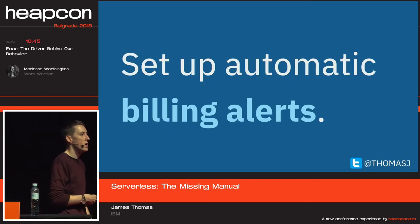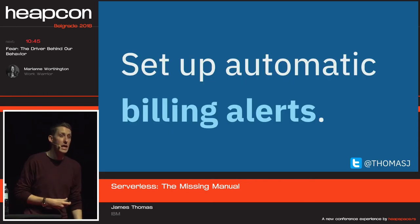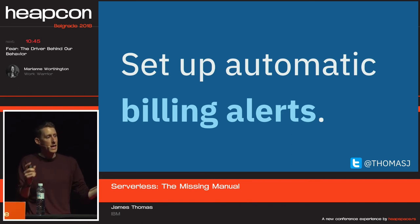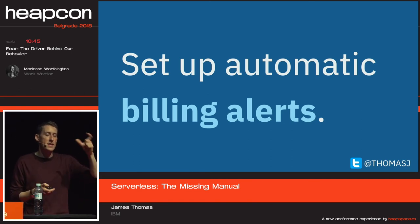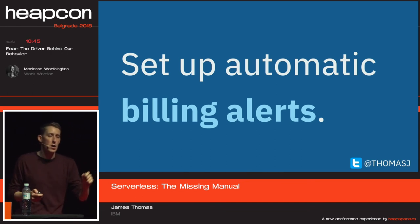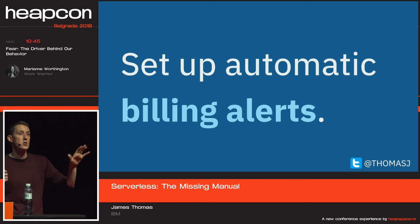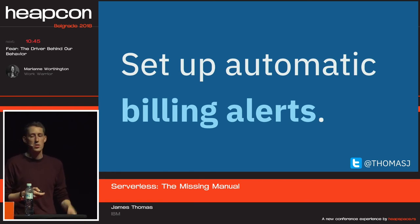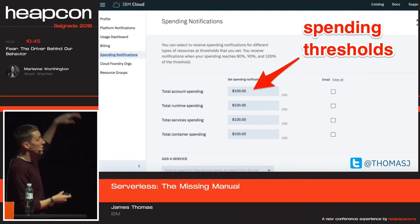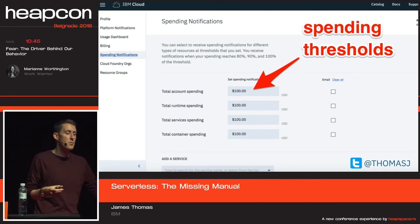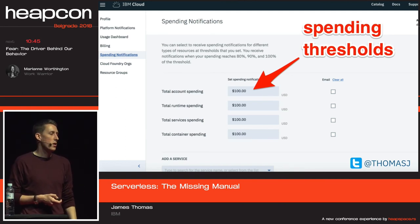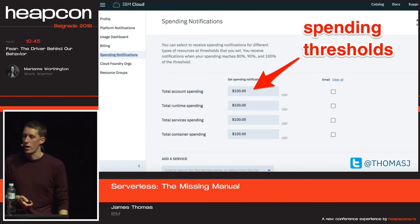The second practical tip is to set up automatic billing alerts. Most cloud providers let you set an estimated monthly spend in your account configuration. If your projected spend goes above that threshold, they send you notifications so you can go in and start turning things off. In IBM Cloud, you can say 'no more than $100 a month' and if projected spend exceeds that, you start getting notification emails to investigate what's using all that capacity.